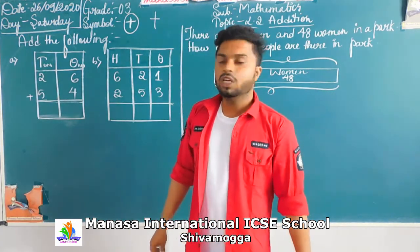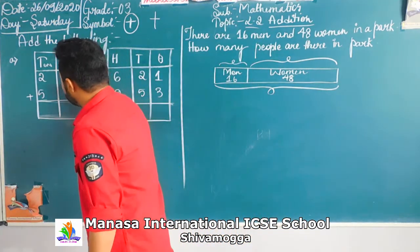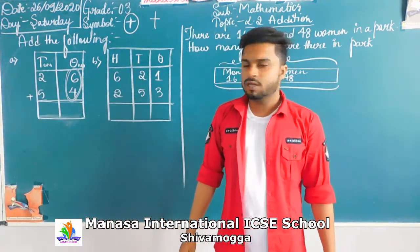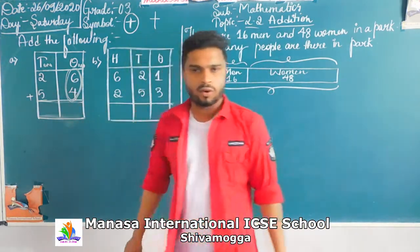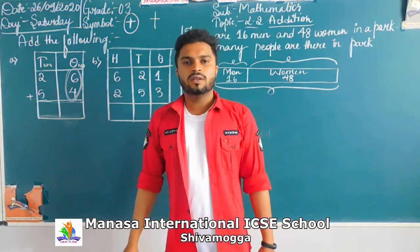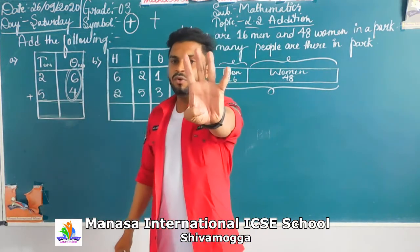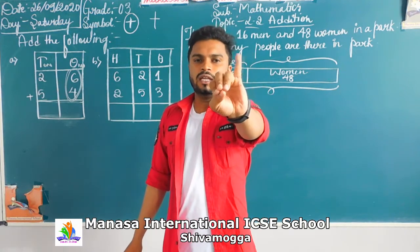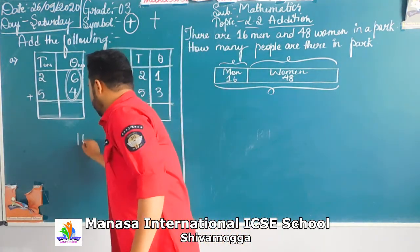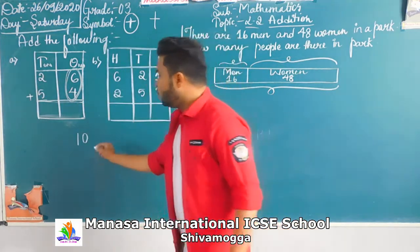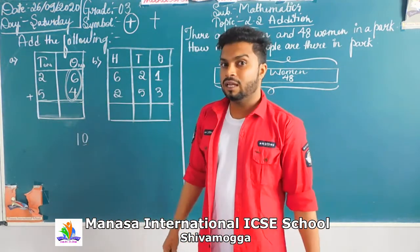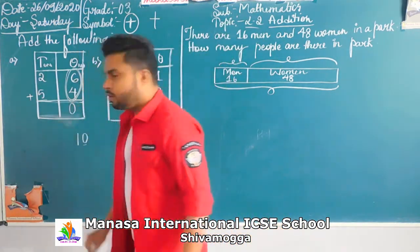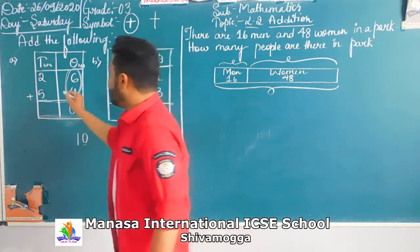Now we are going to add the ones place. What do we have? Six and four. How will you add? Six in the mind, four on the fingers. After six: seven, eight, nine, ten. You got ten. We got two digits, so we will write zero here and keep one as the carry.